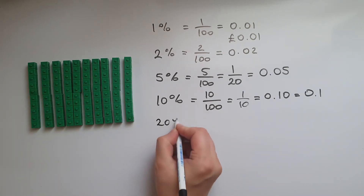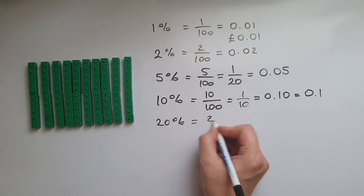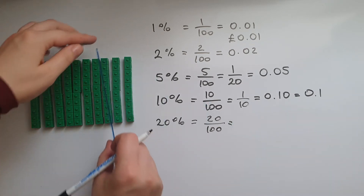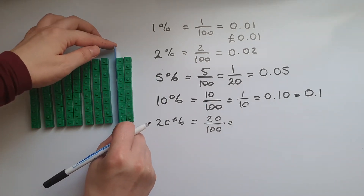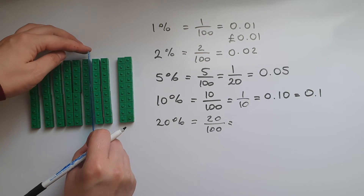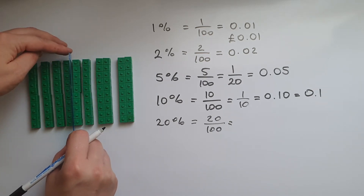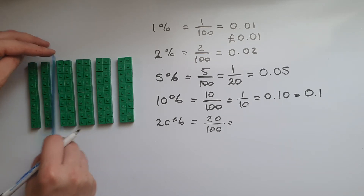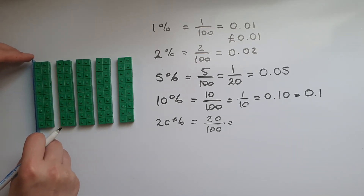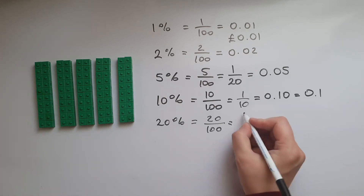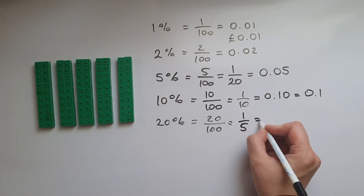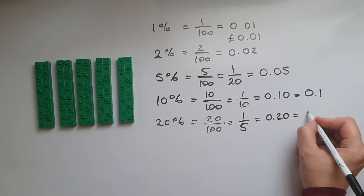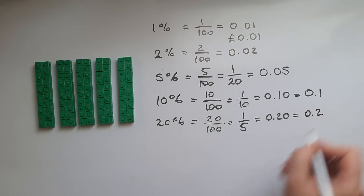20 percent is double the 10 percent, so it's 20 out of 100. How many lots of 20 do we have in 100? As you can see it's five lots of them, so that is one fifth. We write this as 0.20 or just 0.2.